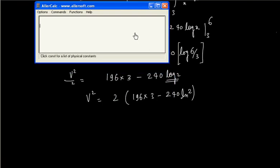So we have 2 into 196 into 3 minus 240 into log 2. This value is 443.3.